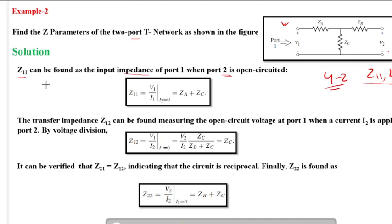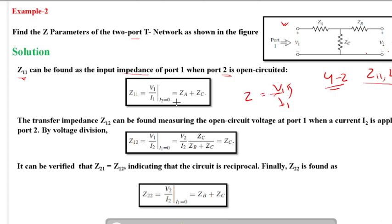Z11 can be found as the input impedance at port 1 when port 2 is open circuited. Impedance is V divided by I. Considering Z11, we look at port 1 with port 2 open circuit — nothing connected there. In that case, Z11 equals V1 divided by I1: how much current is applied at port 1 and how much voltage is observed at port 1 gives the impedance of port 1.